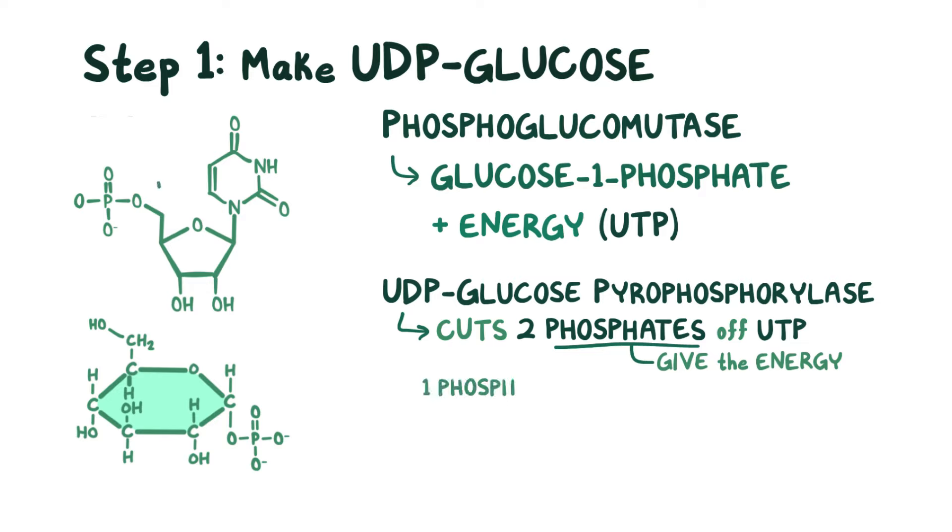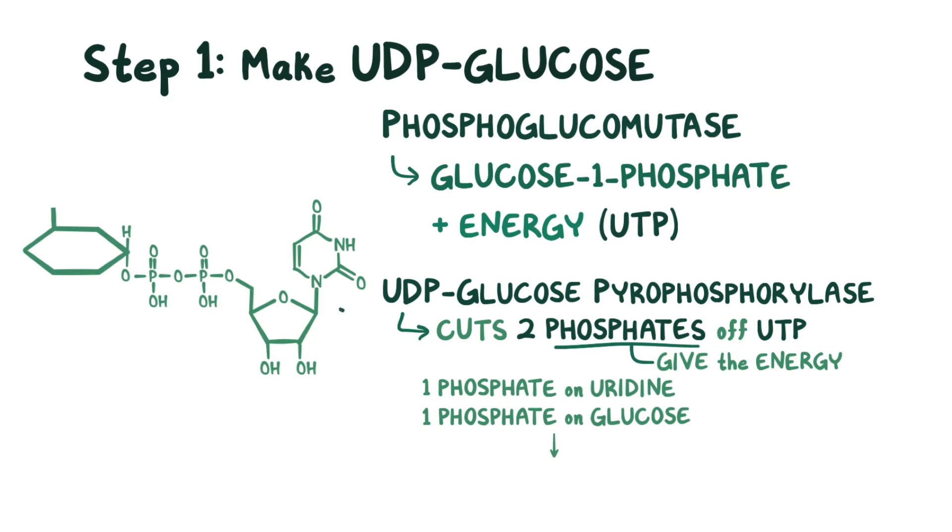So, only one phosphate remains attached to uridine, and then glucose 1-phosphate is added to it. That makes two phosphates, so the resulting molecule is called UDP glucose.